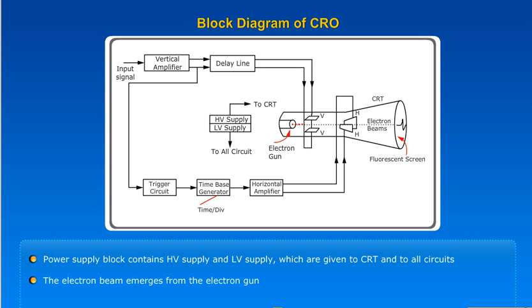The electron beam emerges from the electron gun. The electrostatic tube consists of two sets of deflecting plates which are at right angles to each other.